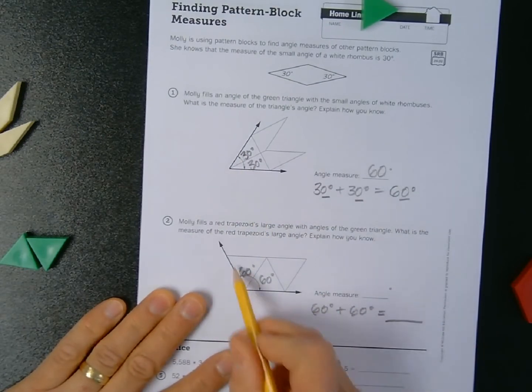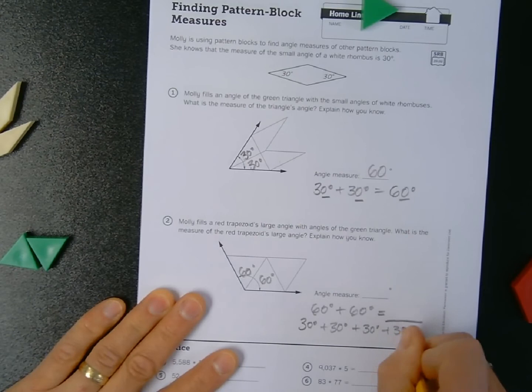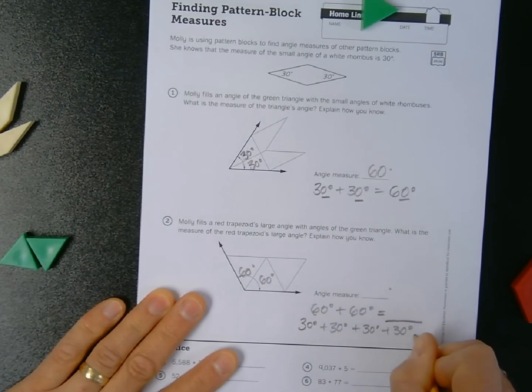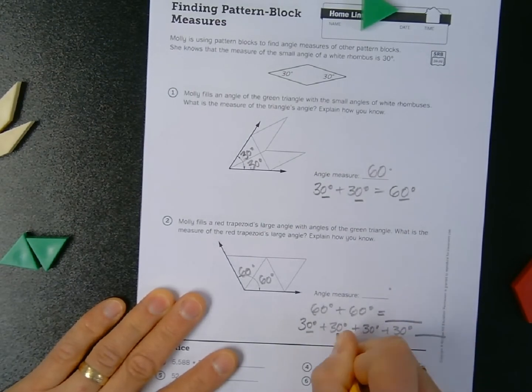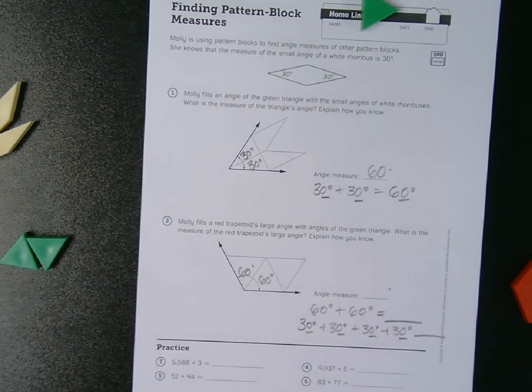This angle measure could also be represented as 30 plus 30 plus 30 plus 30, or 3 tens plus 3 tens plus 3 tens plus 3 tens. So that's how I find the missing angle measures using pattern blocks.